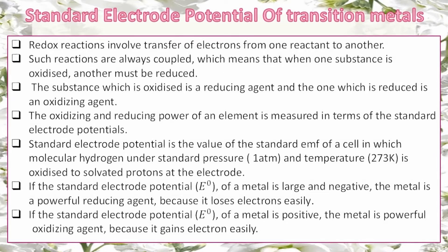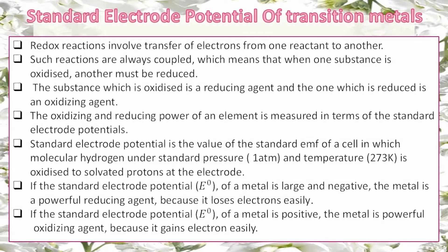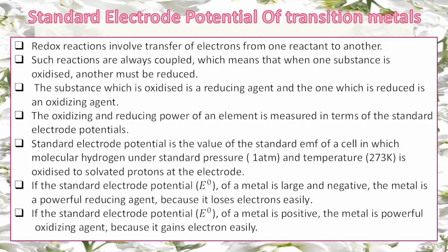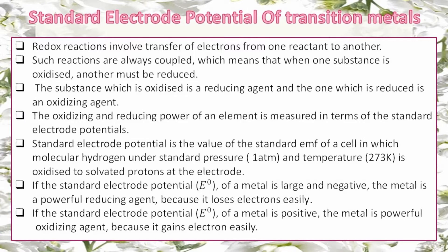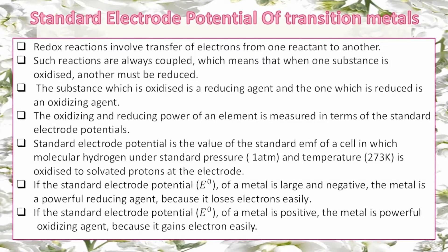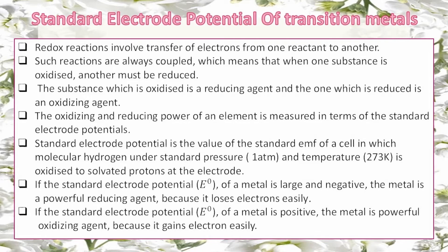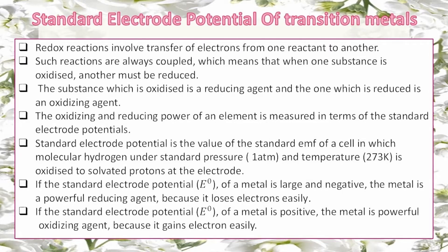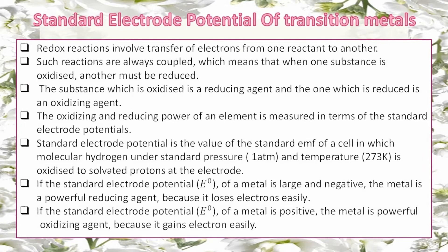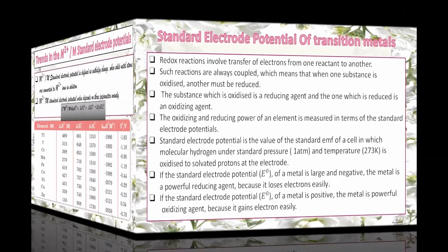If the standard electrode potential of a metal is large and negative, that metal is a powerful reducing agent, which means it will readily lose electrons. If the standard electrode potential is positive, that metal is a powerful oxidizing agent, meaning it has a tendency to gain electrons. So remember: if E° is negative, the metal tends to lose electrons; if E° is positive, the metal tends to gain electrons.